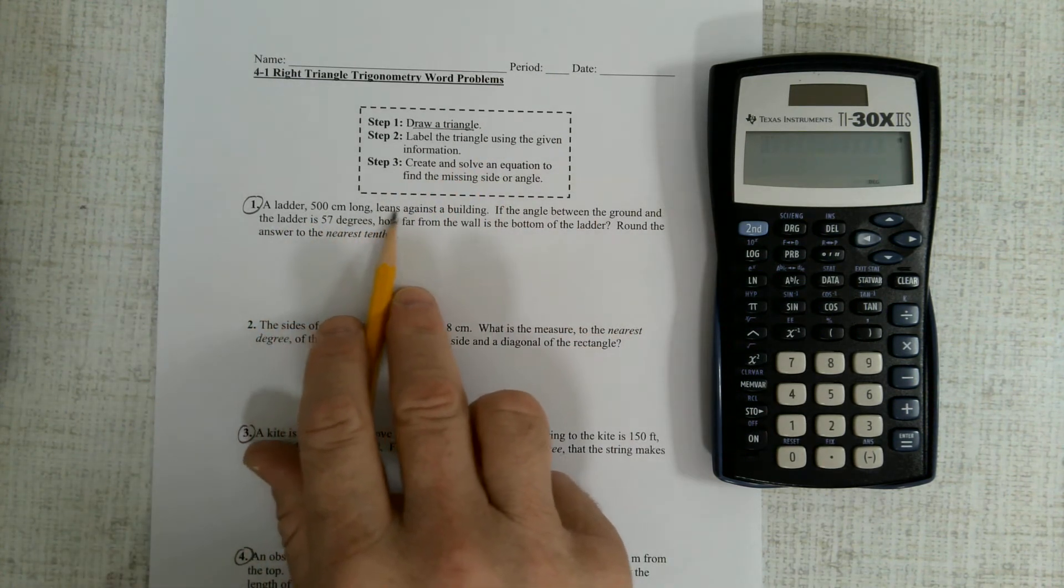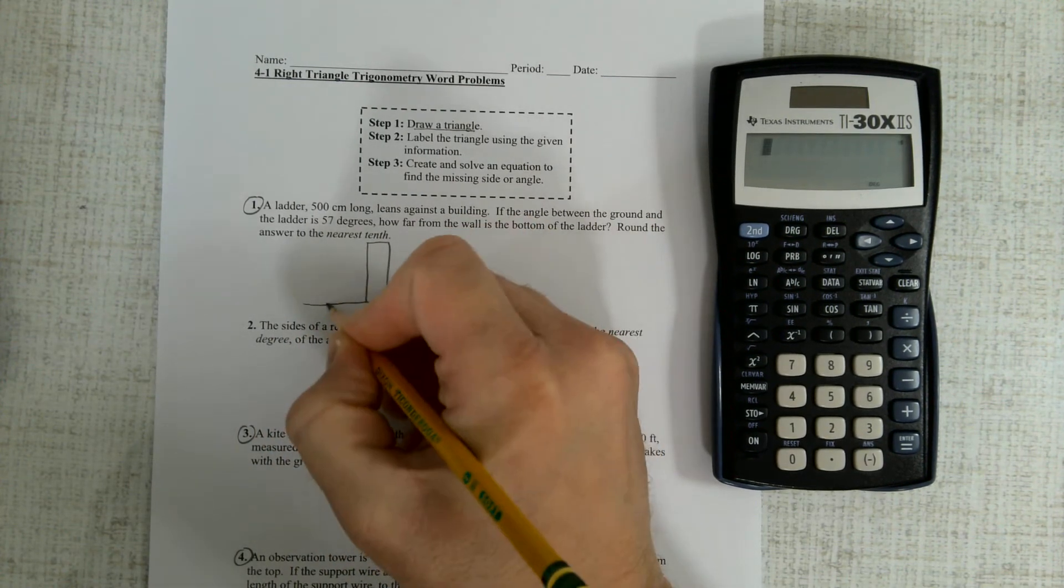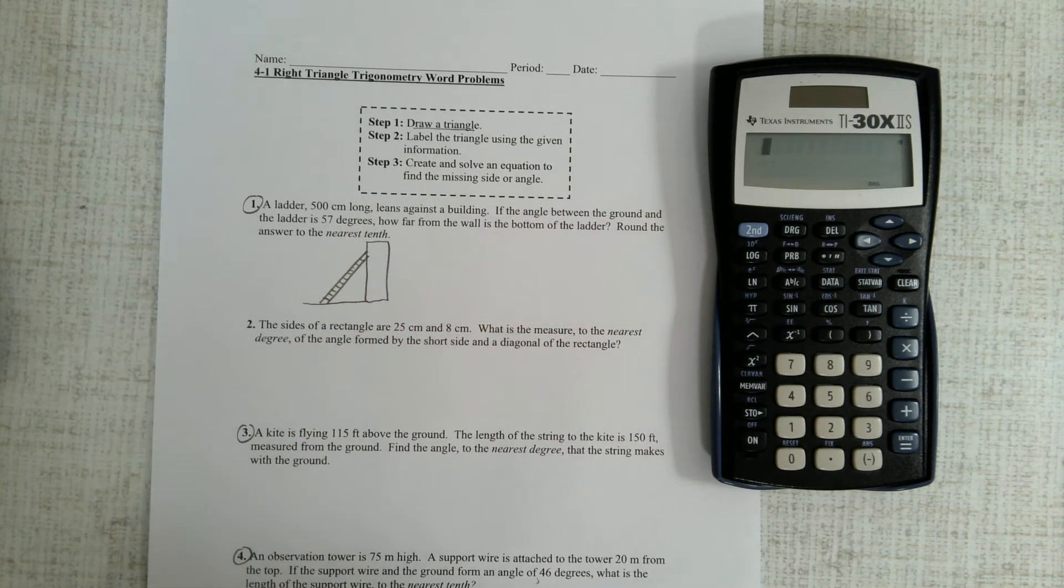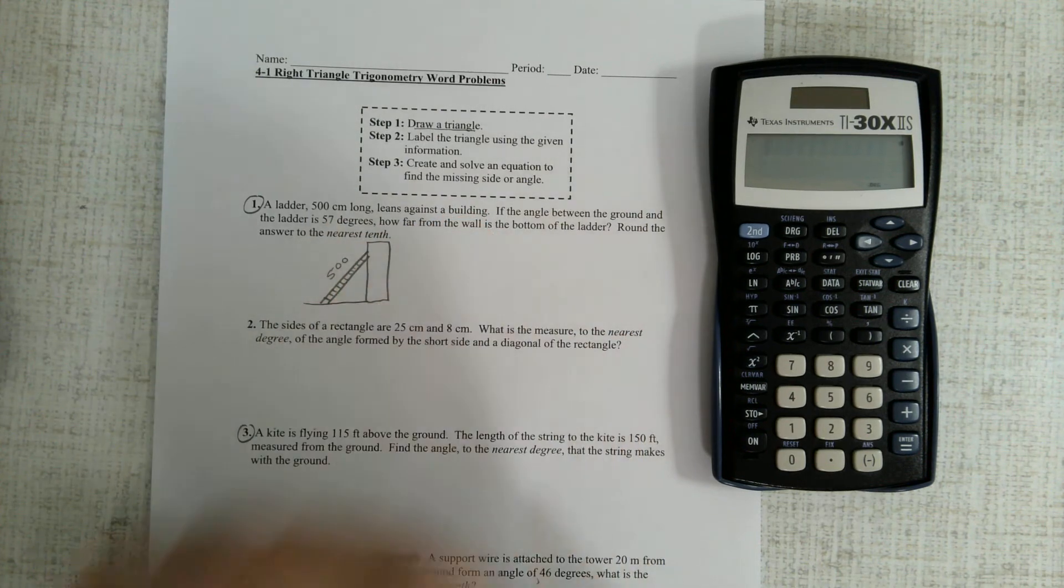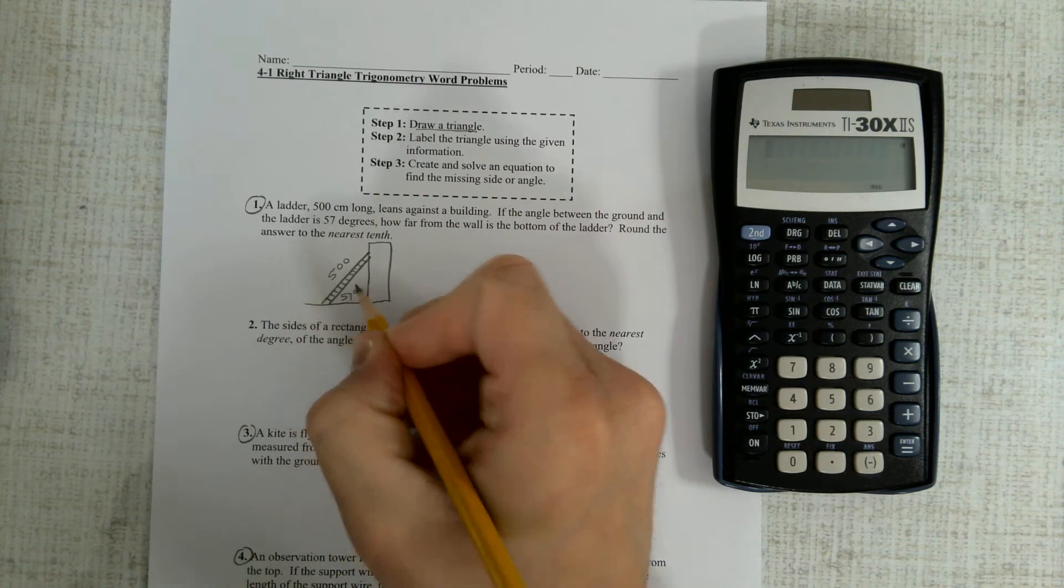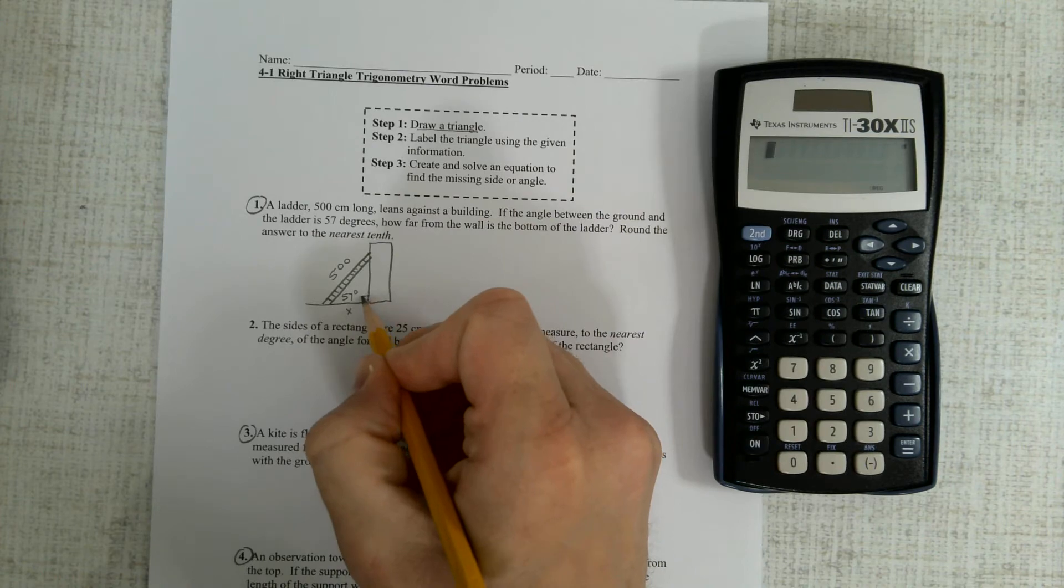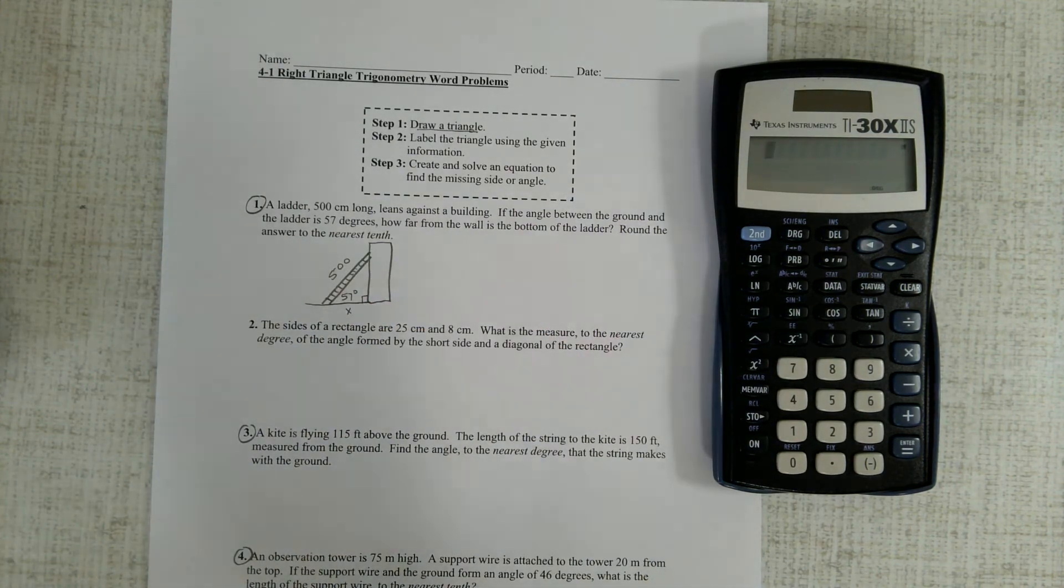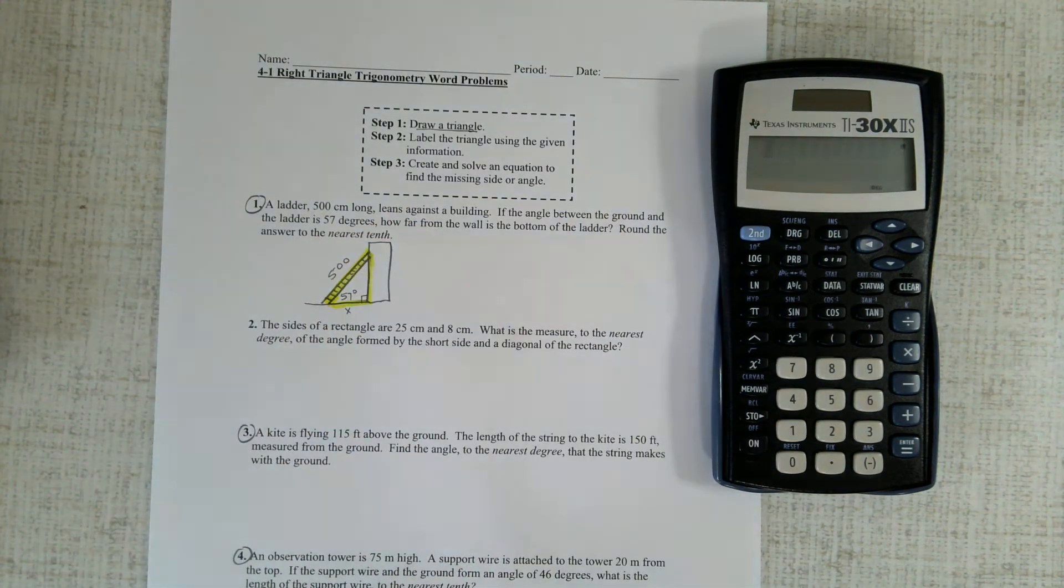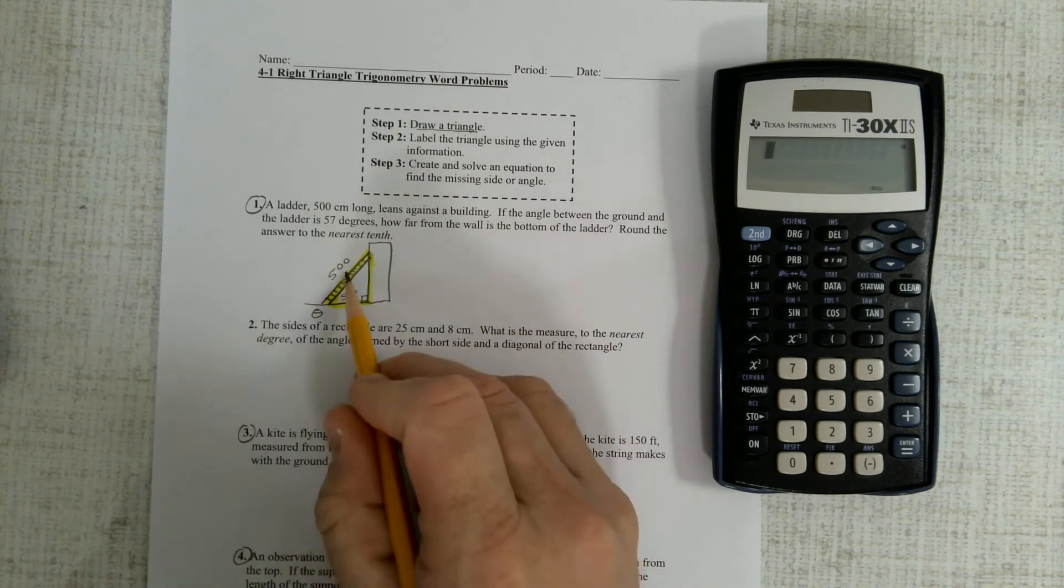So a ladder leans against a building. That's a very common problem that we're going to have. So here's the building, here's the ladder, and the ladder is leaning against the building. The ladder is 500, and the angle between the ground is 57 degrees, and how far from the wall? Well, that's this distance right here, so that's what you want to do. You want to make a triangle on each problem, and there's our triangle. It goes up, down, and straight across. And now if we want to find this length, and we call this theta, it is an adjacent and a hypotenuse.